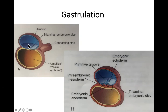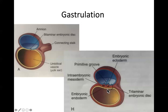So here we have two layers: the epiblast and the hypoblast. By the time we're done, we're going to have three layers. Once we have three layers, instead of having an epiblast and a hypoblast, we have an ectoderm, a mesoderm, and an endoderm — ectoderm meaning outside, mesoderm meaning in between, and endoderm meaning inside.